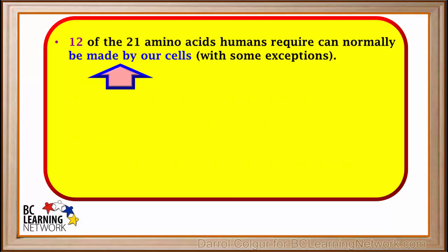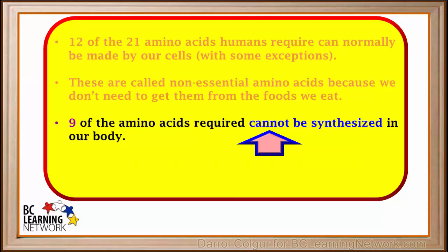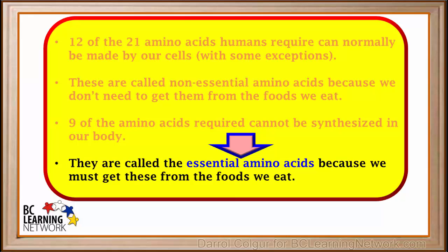Twelve of the 21 amino acids humans require can normally be made in our cells, with some exceptions. These are called non-essential amino acids because we don't need to get them from the foods we eat. Nine of the amino acids required cannot be synthesized by our body. These are called essential amino acids because we must get these from the foods we eat.